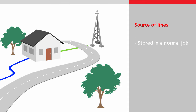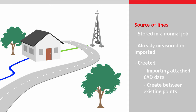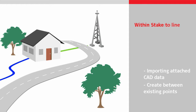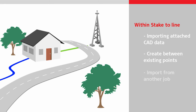Either the line already exists in a job — for example, it was already measured or imported — or it will need to be created, for example by importing attached CAD data, or creating a new line between existing points. Within the Stake to Line app, it is possible to import a line from attached CAD data, create a line based on existing points in the job, or import a line from another job.